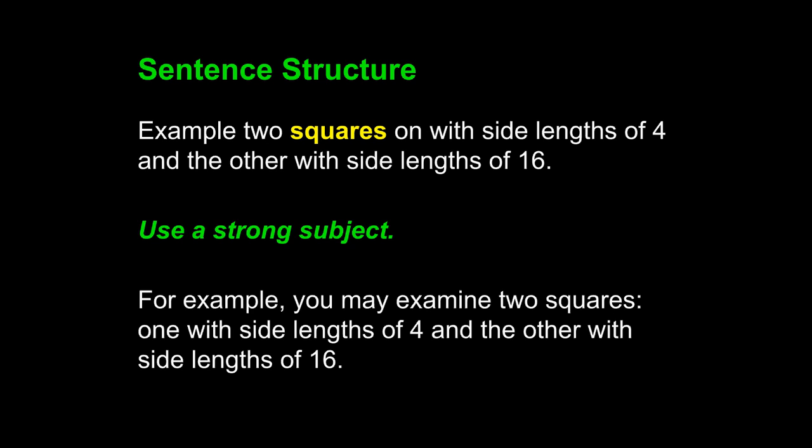One with side lengths of 4 and the other with side lengths of 16. Now we are focusing on the strong subject 'you.' The original word 'example' is expanded into a proper transition phrase — for example — with a comma separating it from the strong subject. For example, you may examine two squares, one with side lengths of 4 and the other with side lengths of 16. Our new sentence uses a clear subject, which leads to strong sentences.